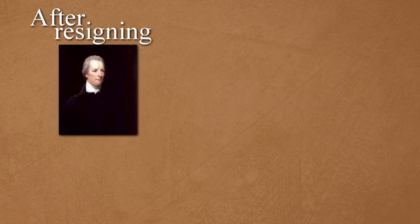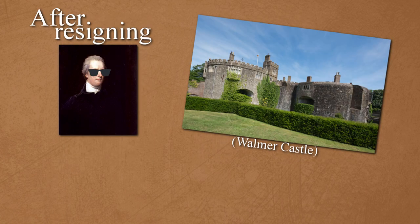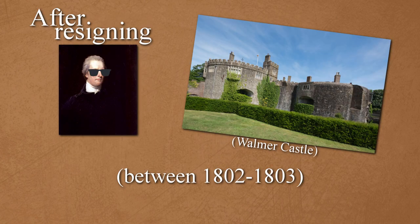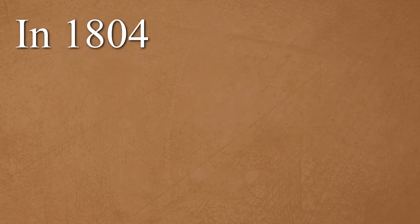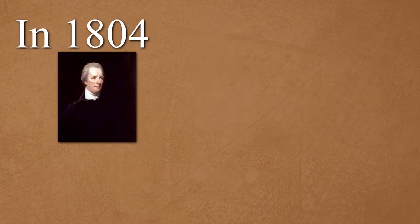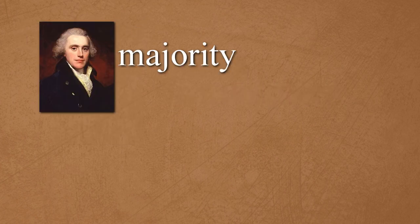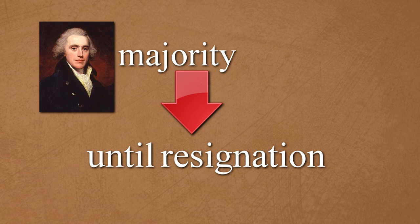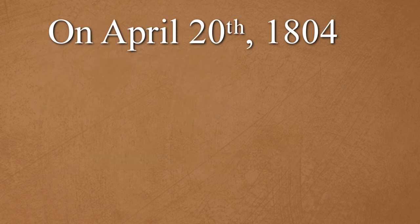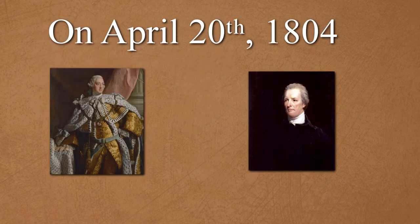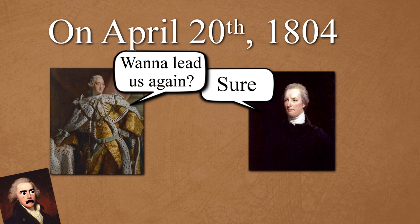After resigning, Pitt spent a few years away from politics. But in 1804, Pitt became increasingly critical of the government's financial policy. Addington's majority soon began to fall until his resignation. On April 20th, 1804, George III once again asked Pitt to create a new ministry.